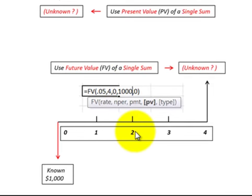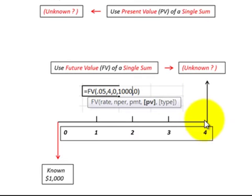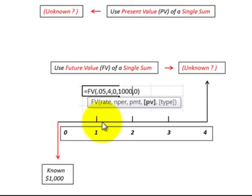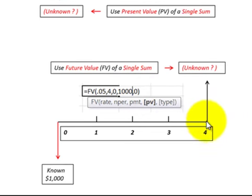Next let's look at the future value function. Here we have a known amount at the beginning of our cash flow diagram, and then we want to know what its future value is at the end — that would be at the end of 4 years for this example. So here you put in your future value function, again the parentheses, and then the rate, number of periods, and then the payment amount here would be 0. We're only looking at putting in the present value here, so that would be the $1,000 as a present value. Then put either a 0 or a 1: 0 means it's calculated out at the end of the fourth year, 1 would mean at the beginning of the fourth year.